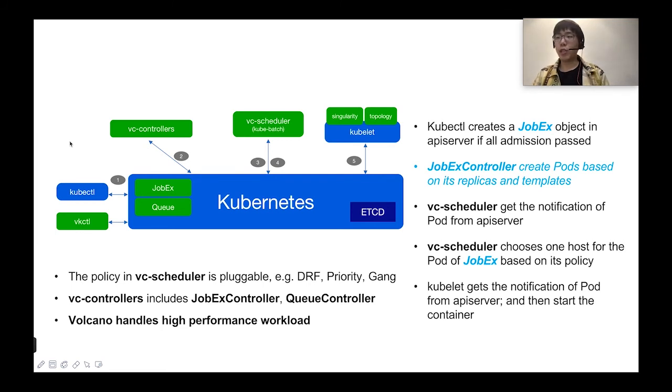Job scheduling and management becomes pretty complex and critical for high performance batch computing. Commonly requires support for diverse scheduling algorithms, more efficient scheduling, non-intrusive support for mainstream computing frameworks, and support for multi-architecture computing. In Kubernetes, the kubectl creates a job objects in API server if all automation passed. Then the job controller creates pods based on its replicas and templates. Right now, the policy in default scheduler is pluggable, like DRF, priority, and gang scheduling. Volcano handles all the high performance workloads.